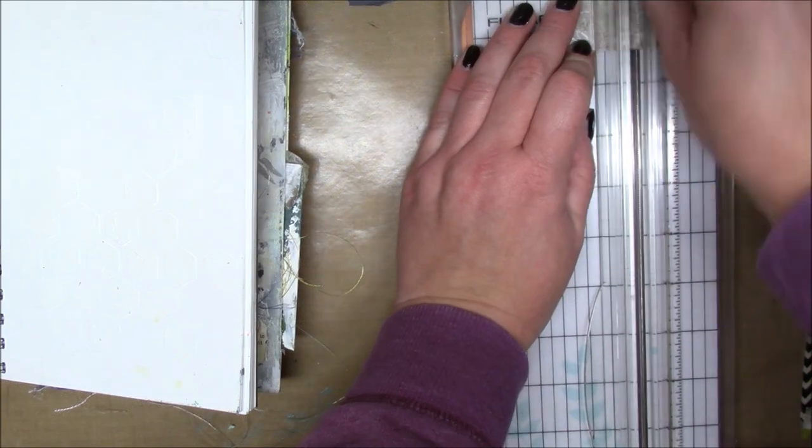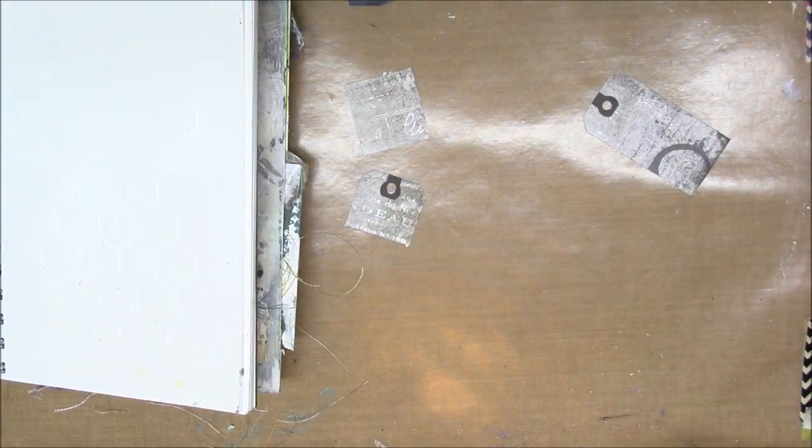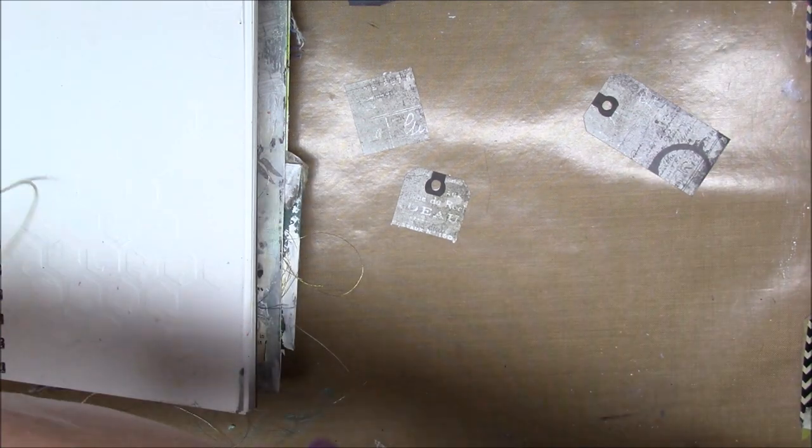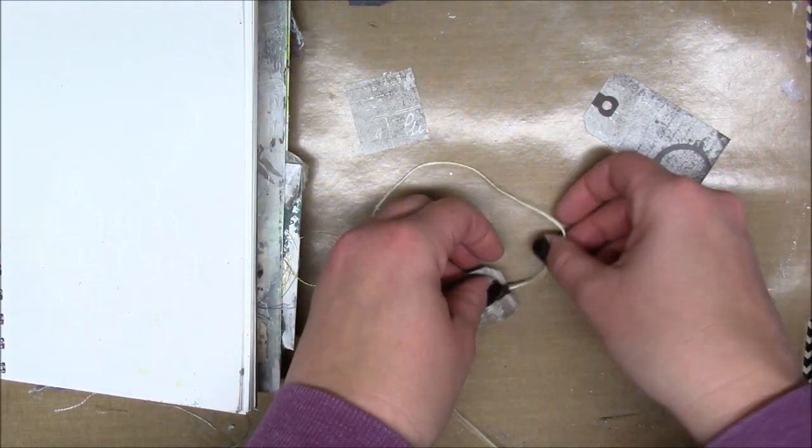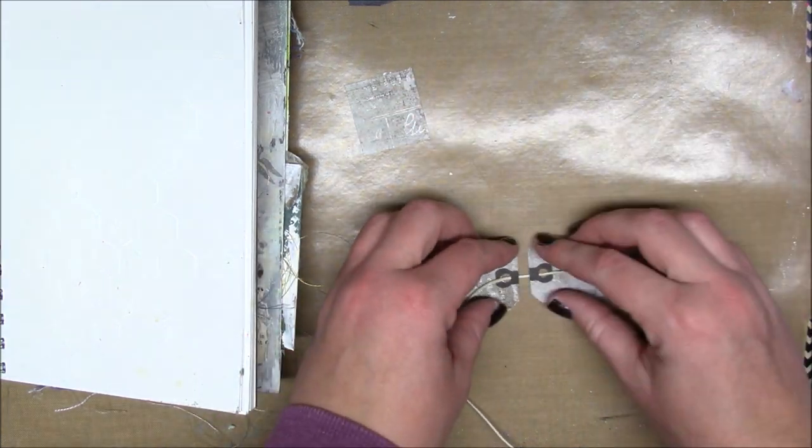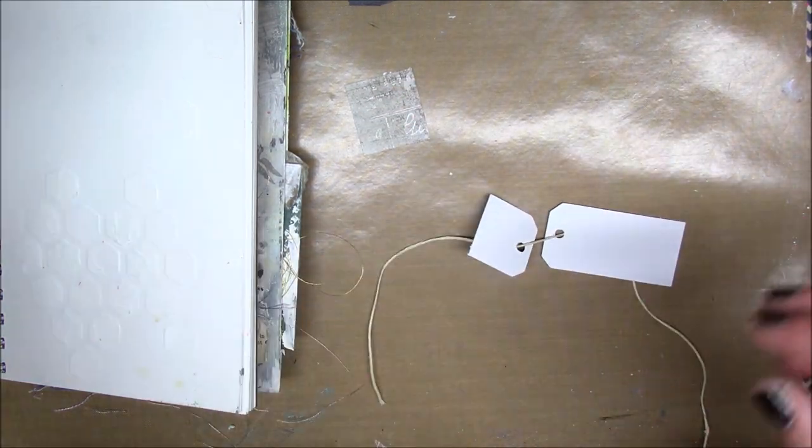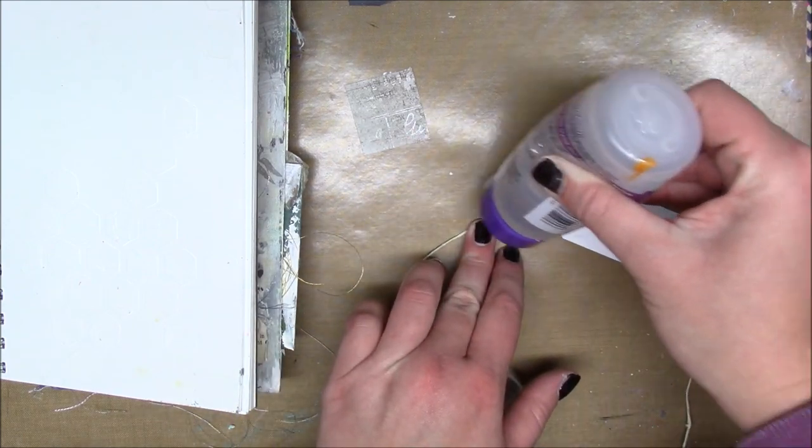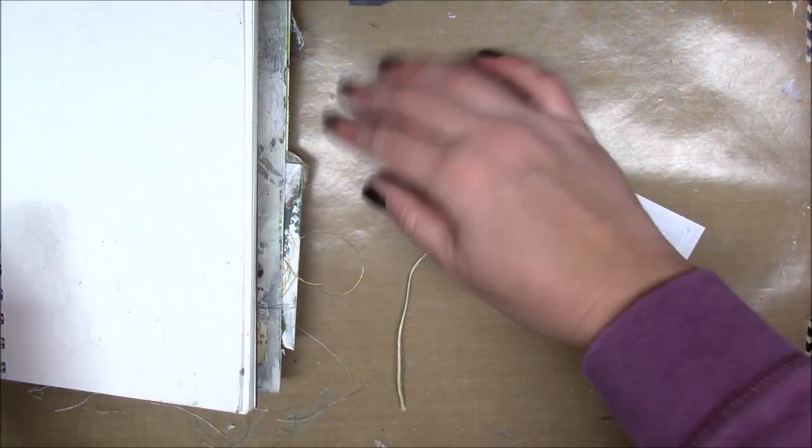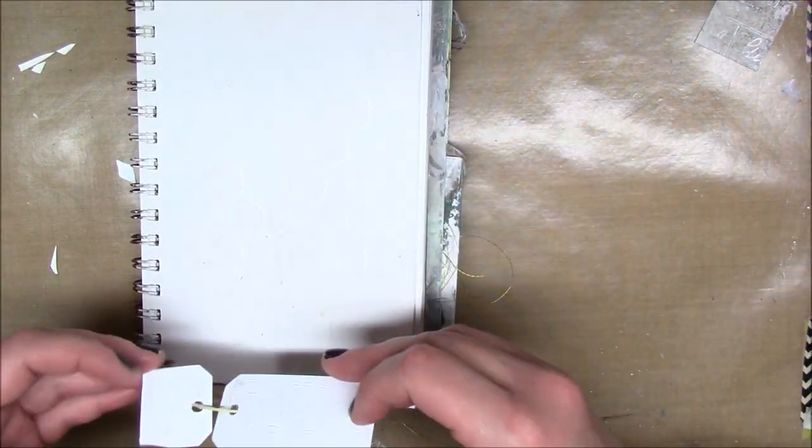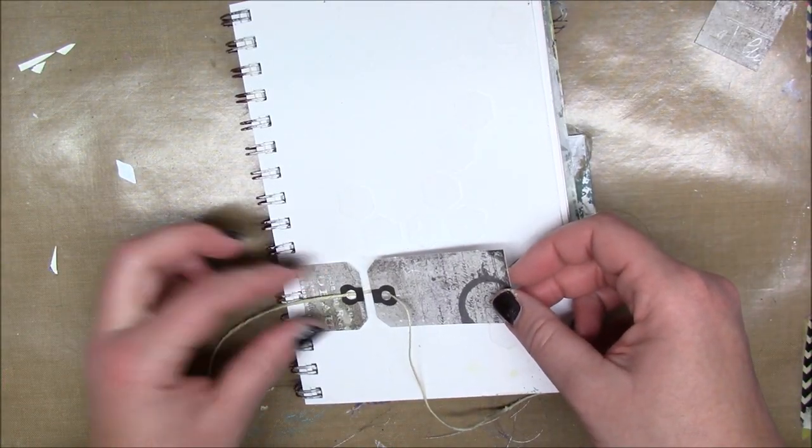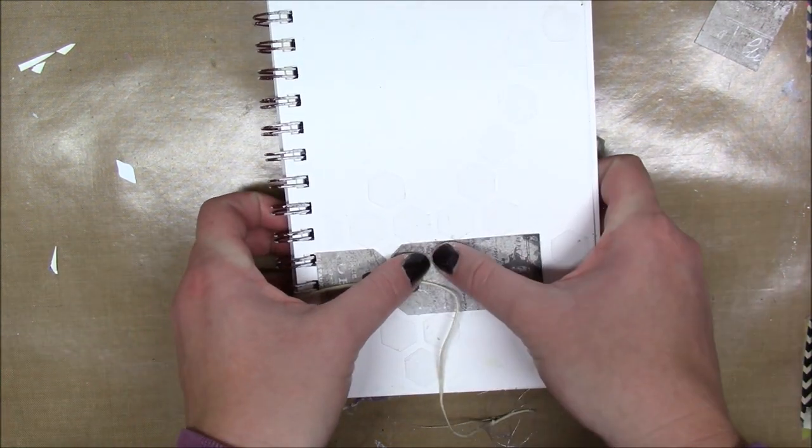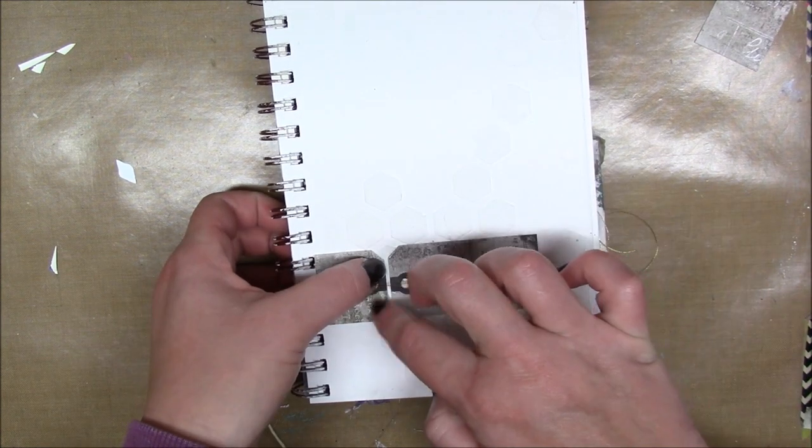I have some stamp tags here from Seven Dot Studio. Part of the challenge tutorial that was posted had these two tags linked together with string on the page, so I wanted to mirror that element. I'm just linking my tags together with a piece of natural hemp twine and gluing that down on my page so that they're together, and then I can tie a little bow to keep them together.